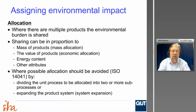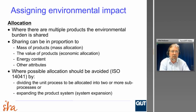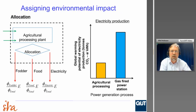One method is allocation — you share the environmental impact in proportion to the mass of the product. So if sharing between sugar and molasses, you take the fractional mass of sugar as a fraction of the total. You can do that by mass, by energy content, or by value. But what the standards say — and you're probably thinking this as well — is that this is a rather questionable way of allocating emissions. If you can, you avoid it by either dividing your process so that only one product comes out of your boundary, or by expanding the product system.